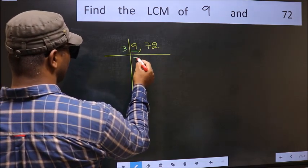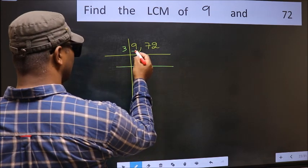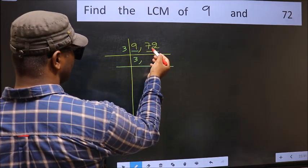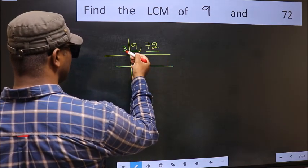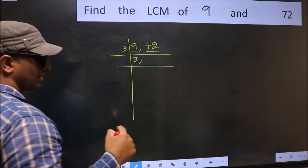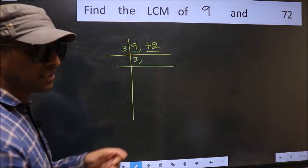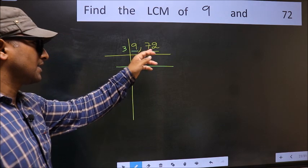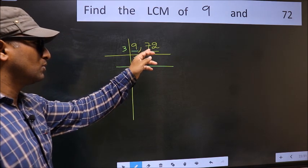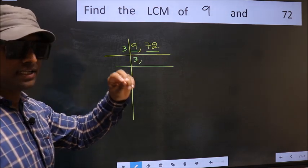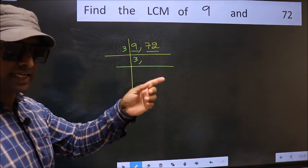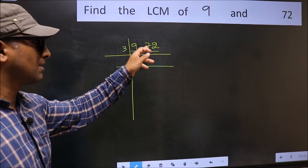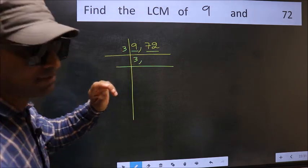The other number is 72. To check whether 72 is divisible by 3 or not, add the digits: 7 plus 2 gives 9, and 9 is divisible by 3. So 72 is also divisible by 3.